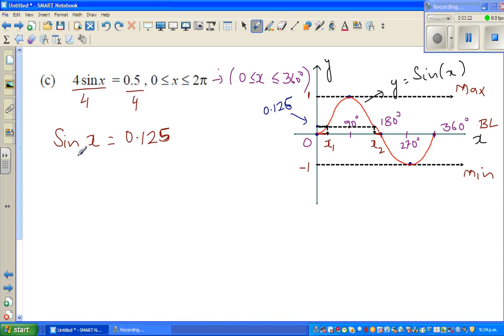Whatever x1 you get is by finding the sine inverse of 0.125. So you're finding sine inverse of both sides. The reference angle, or principal angle, is sine inverse.